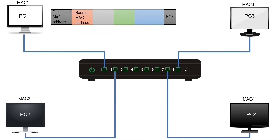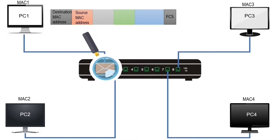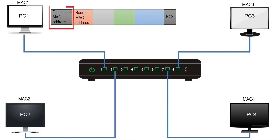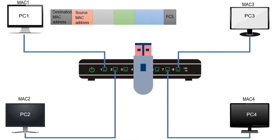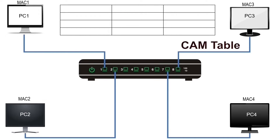A switch understands and uses only hardware addresses to process frames. When it receives a frame, it reads the source MAC address and destination MAC address of the frame. It uses the source address to learn about the connected device, and uses the destination address to make a forwarding decision. It saves source addresses in a table known as the CAM table. The CAM table has three fields: MAC address, port, and aging.